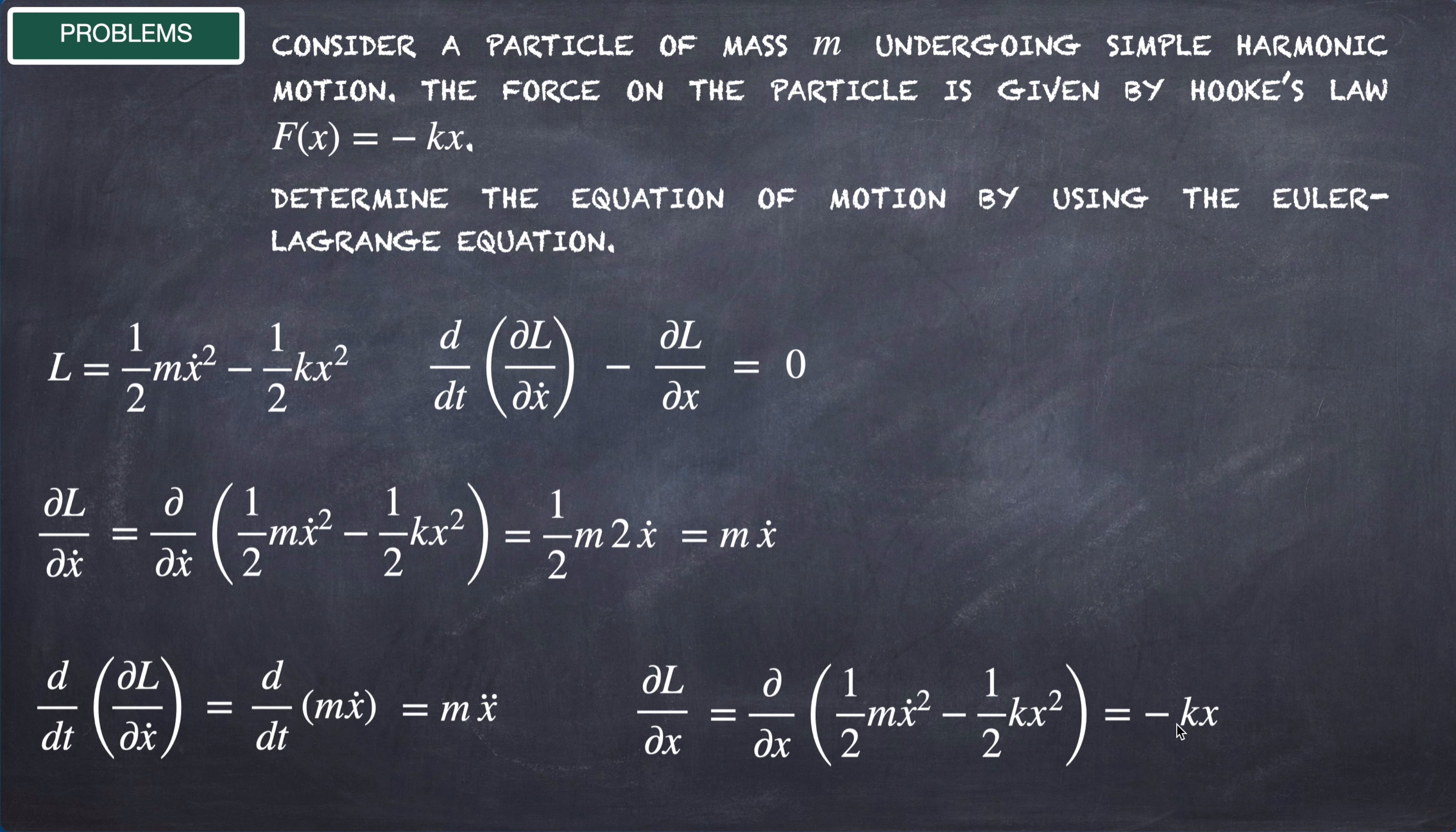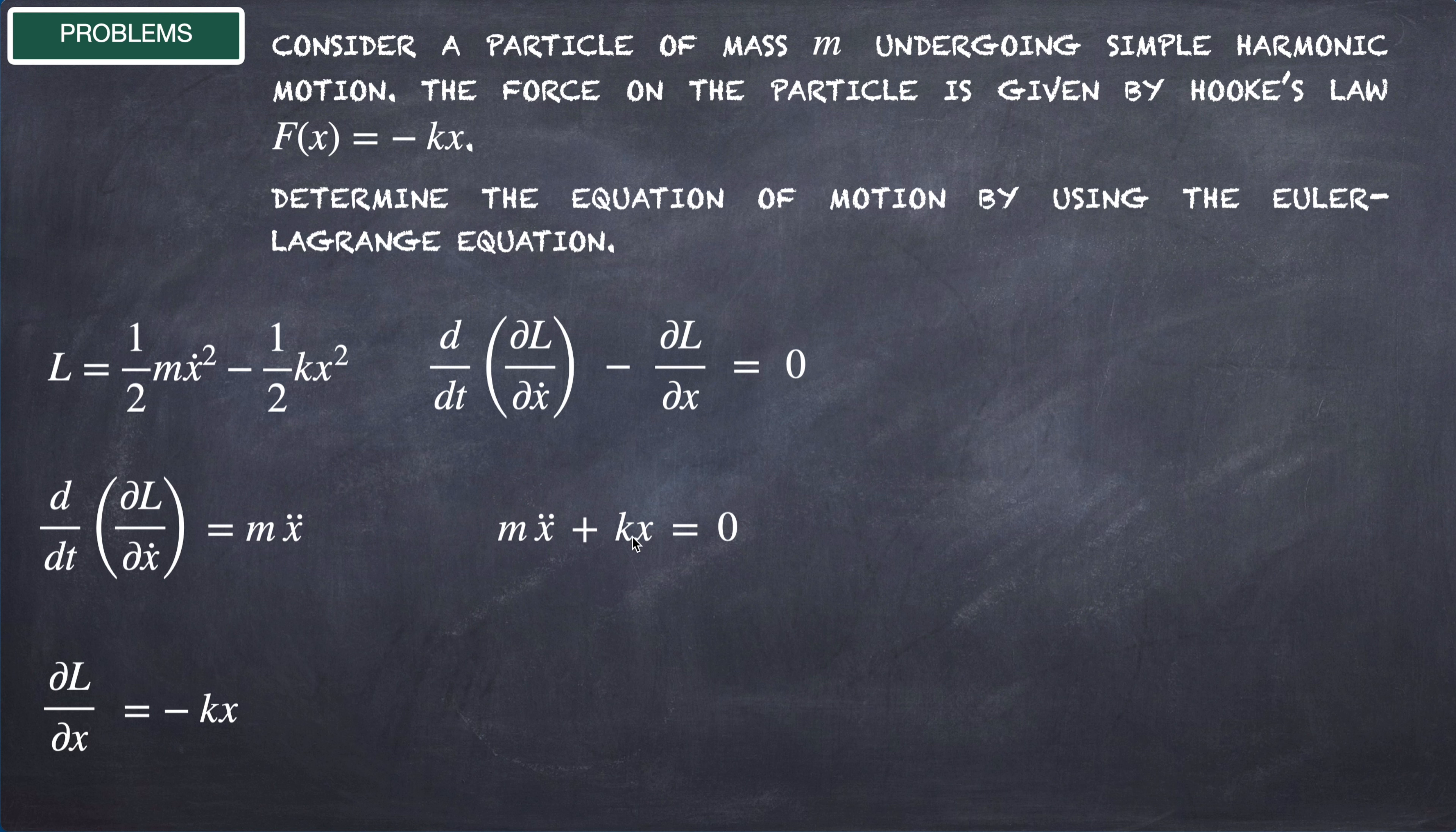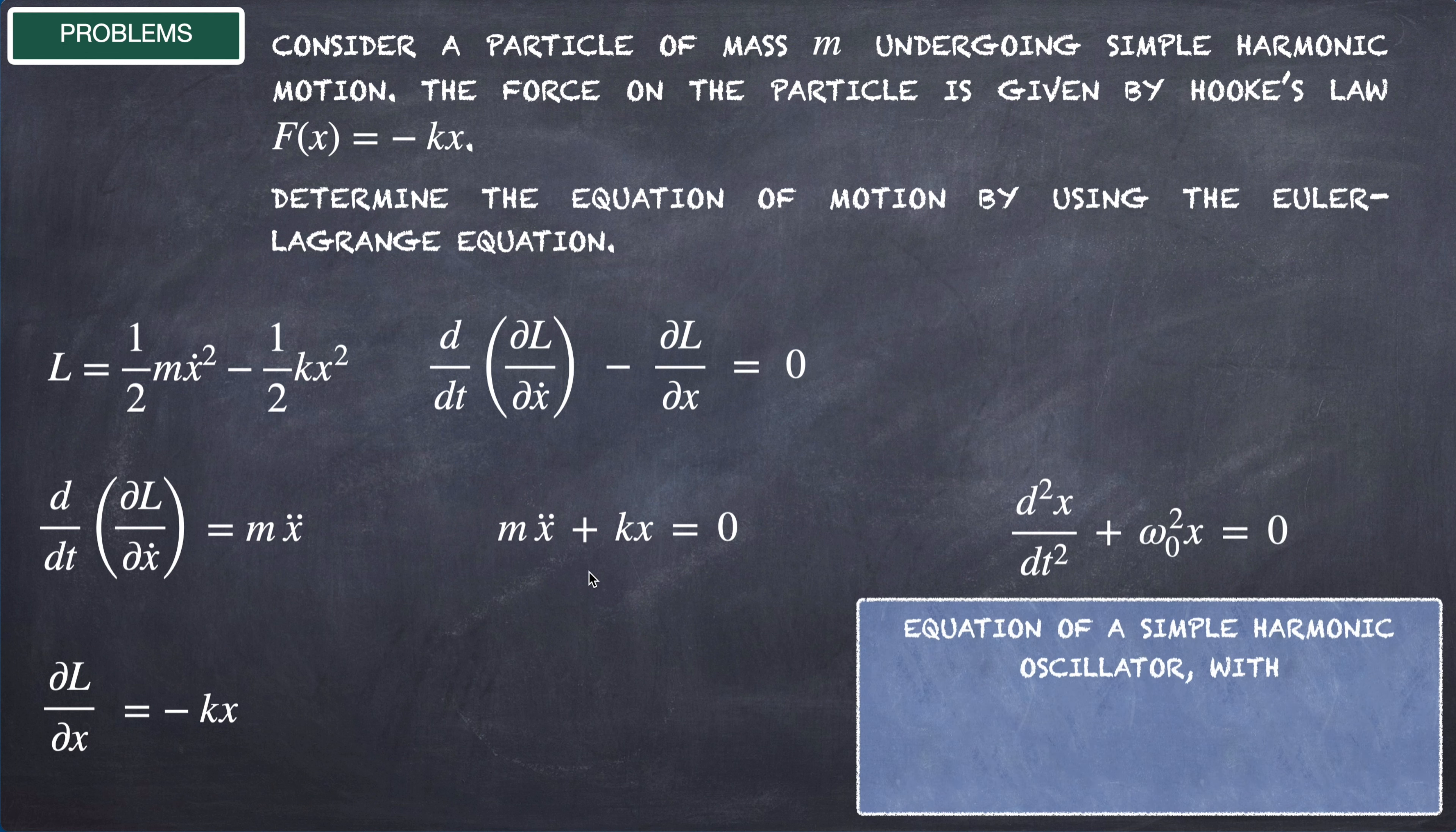Using this result in the Euler-Lagrange equation, we get mẍ minus (-kx), which with the minus sign gives us mẍ + kx = 0. If we divide this equation by m, we get ẍ + (k/m)x = 0.